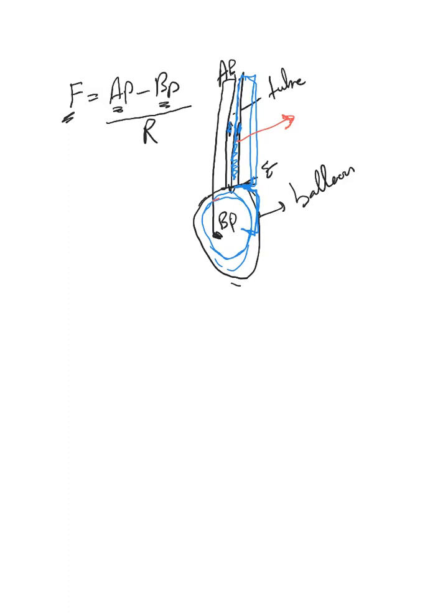So we have to overcome the resistance here and then overcome the resistance here. The pressure needed to overcome the resistance from A to E in the tube we call it resistive pressure.